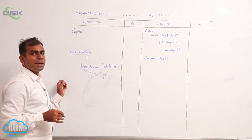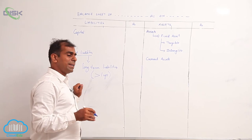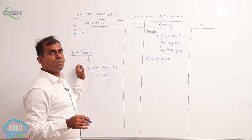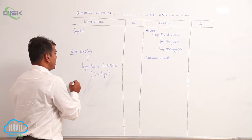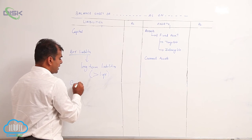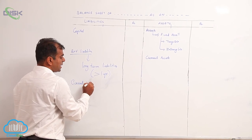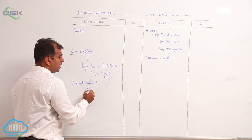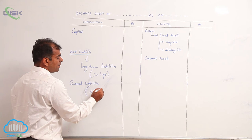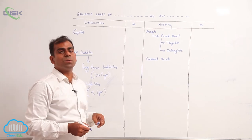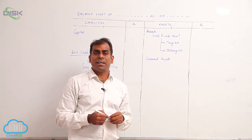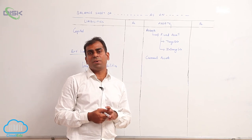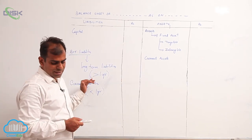So whenever you have to pay any amount after one year, it's called a long-term liability. Similarly, you have external liabilities called current liability. Current liabilities are those amounts which the business has to clear within less than one year. The amounts which have to be repaid in less than one year are called current liabilities.